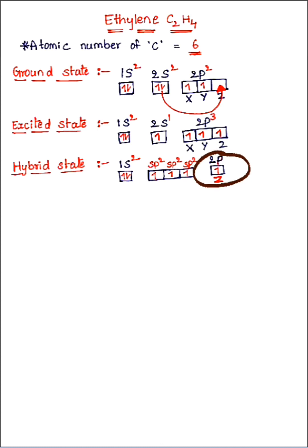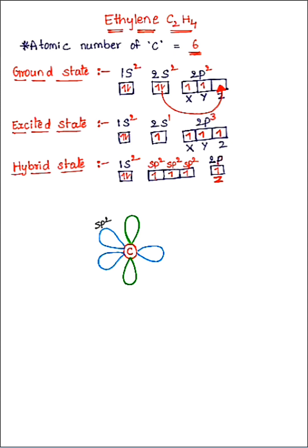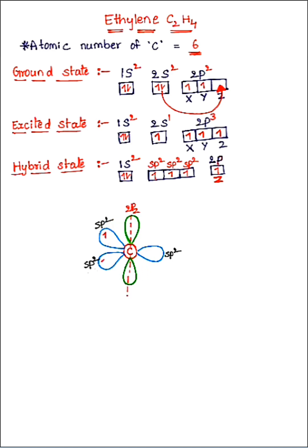Looking at the geometry: the carbon atom has three sp2 orbitals and one unhybridized 2pz orbital. All four orbitals have one electron each. Remember that the bond angle in sp2 hybridization is 120 degrees. So far we have seen sp2 hybridization in a single carbon atom only.